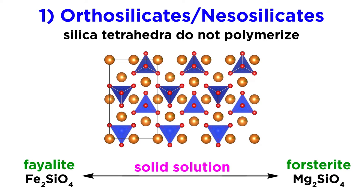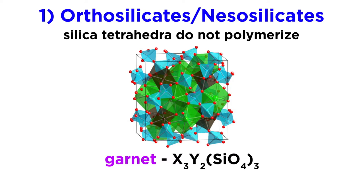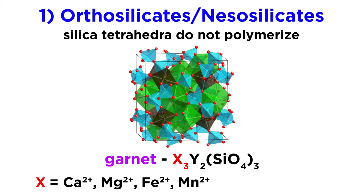Another important group of orthosilicates is garnet, which comes in a wide variety of compositions with extensive solid solution. Its base formula is X3Y2(SiO4)3, where the X site is an eightfold site that can be occupied by calcium, magnesium, ferrous iron, and manganese, and the Y site is a sixfold site that typically contains aluminum and ferric iron.